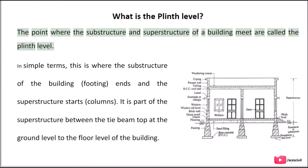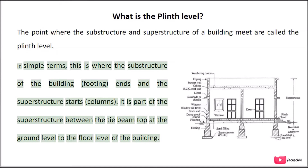The point where the substructure and superstructure of a building meet is called the plinth level. In simple terms, this is where the substructure of the building — the footing — ends and the superstructure starts — the columns. It is the part of the superstructure between the tie-beam top at ground level to the floor level of the building.